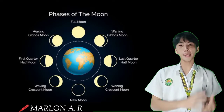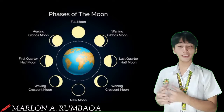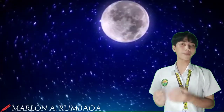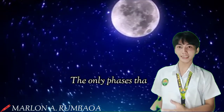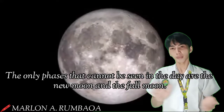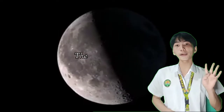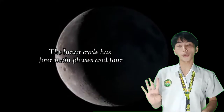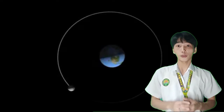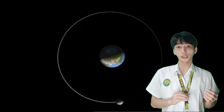The Moon is not only visible at night — we often see it during the day. The only phases that cannot be seen in the day are the new moon and, of course, the full moon. From an astronomical perspective, the lunar cycle has four main phases and four intermediate phases. Let's take an in-depth look at each one of the moon phases in order.